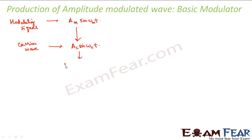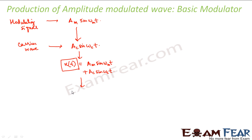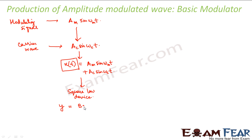When the modulating signal acts on the carrier wave, a combined signal is formed — AM sin(ωm·t) combined with the carrier wave. This output is then made to pass through a square law device. A square law device is any device into which when you give an input x, the output y is of the form y = bx + cx². That is why it is known as a square law device.